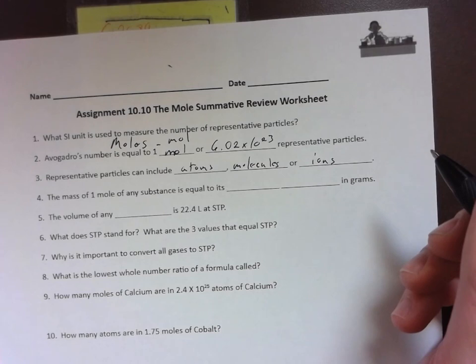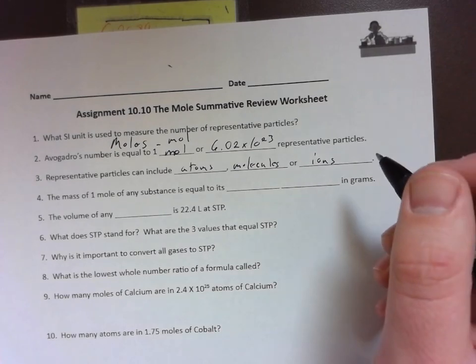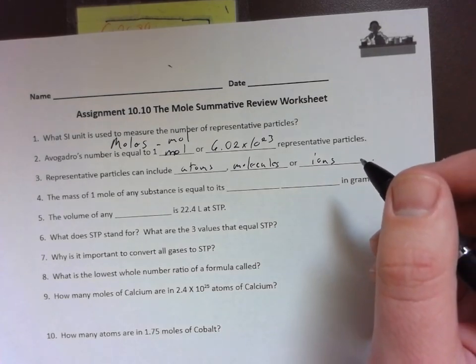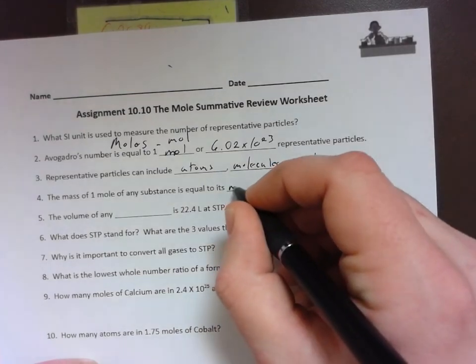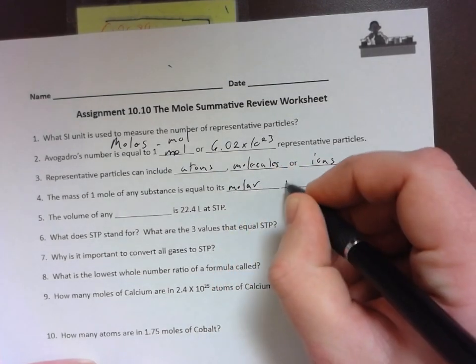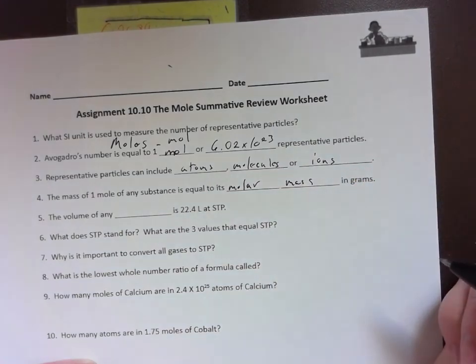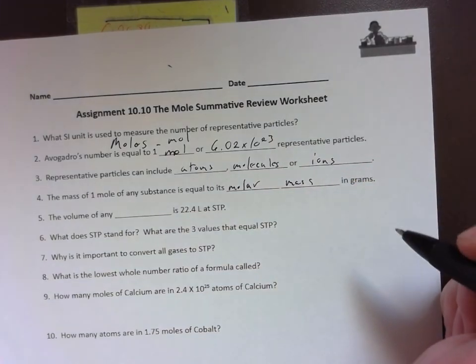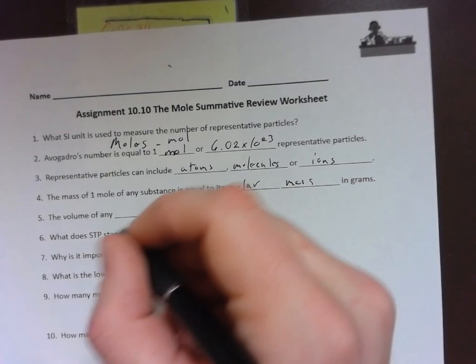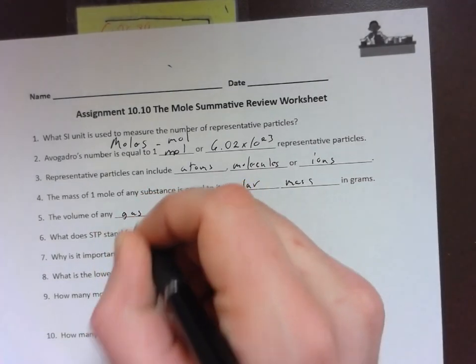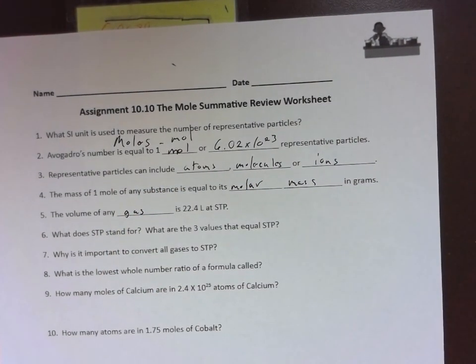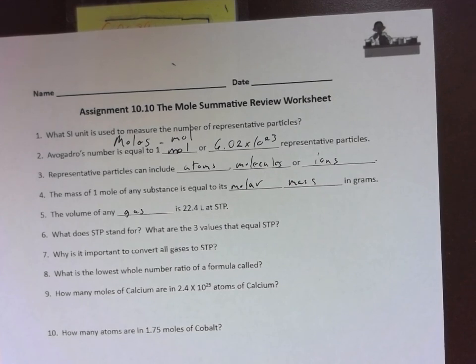The mass of one mole of any substance is equal to the molar mass in grams. That is what we use on the periodic table. The volume of any gas at STP is going to be 22.4. Remember, STP is needed to figure out that the liters is going to be 22.4.